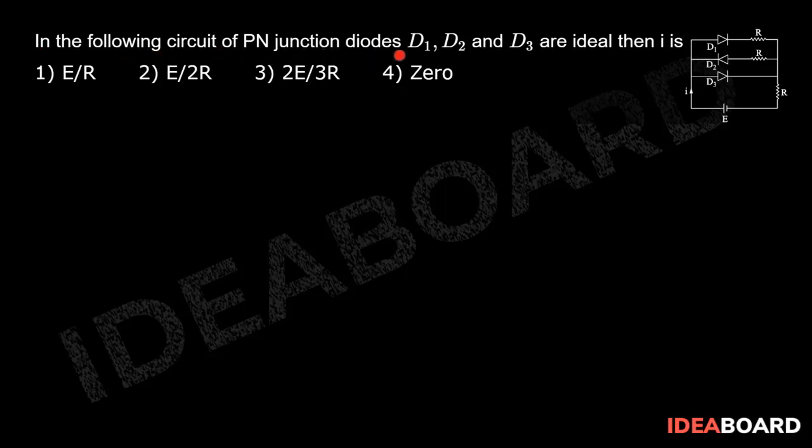In the following circuit of PN junction diodes D1, D2 and D3 are ideal, then I is.